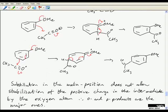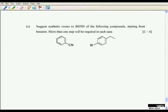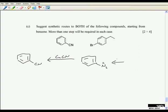The final part is part c, suggesting synthetic routes to both of these compounds starting from benzene. More than one step will be required. Let's have a look. How would we approach this first one? Perhaps it's useful in this case to start at the end because we know we want benzonitrile. We only know one way of putting a cyano group onto an aromatic ring, and that's by reaction of a diazonium salt with copper cyanide.